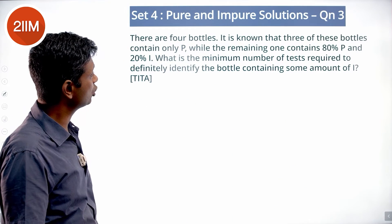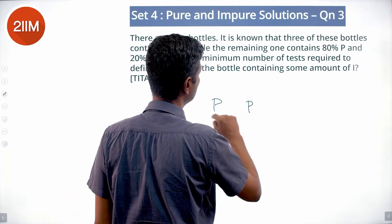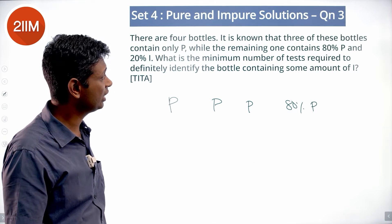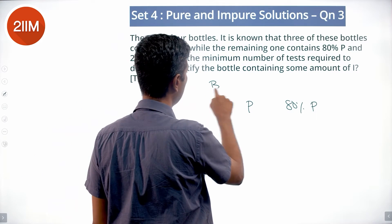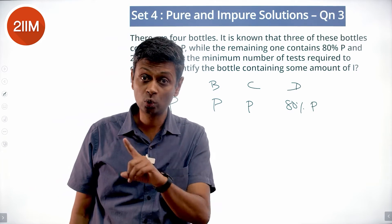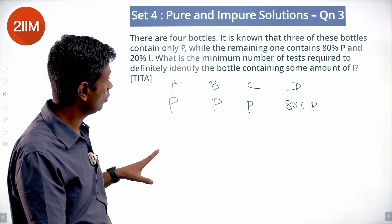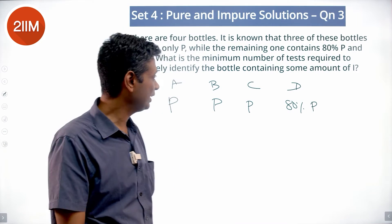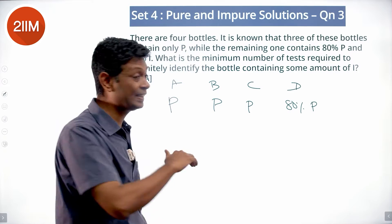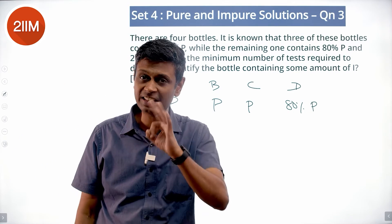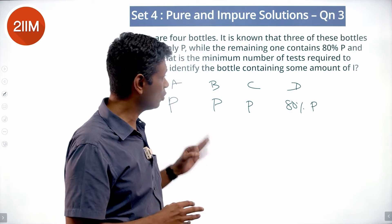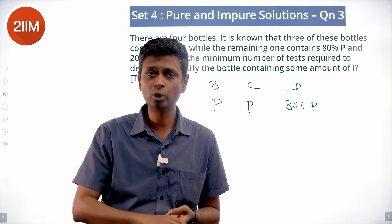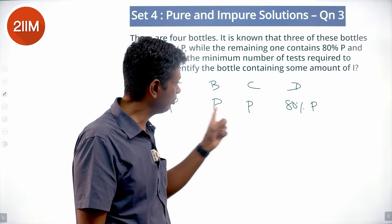Four bottles — it is shown that three of the bottles contain only P and one contains 80% P and 20% I. What is the minimum number of tests required to definitely identify the bottle containing some amount of I? Call them A, B, C, D. We cannot test all four put together — the impurity level across four equal quantities would be too diluted. We also cannot take any three together: P + P + P gives no impurity, and P + P + 0.8P gives more than 90% P, so impurity won't be detected.